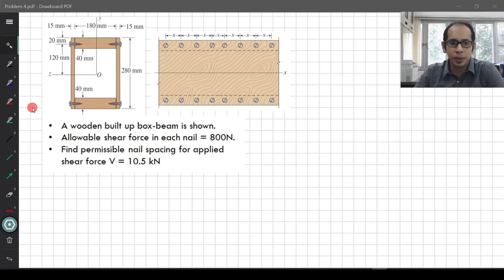This is the first problem example on the built-up section. Let us see what the problem says. You have a wooden built-up box beam. It is a box beam that you see because it looks like a box.